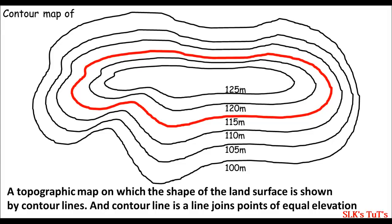This map represents the contour map of a mountain, because the elevation of inside contours is maximum compared to the outside contours — the elevation is gradually increasing from outside to inside.